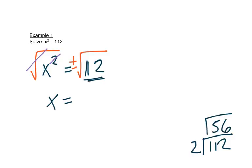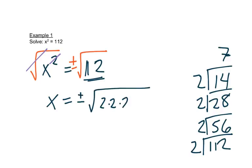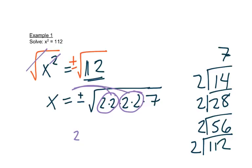We divide 28 by 2 to get 14, and 14 by 2 to get 7. Seven is prime, so we're finished. So we have 2 × 2 × 2 × 2 × 7. Looking for pairs of numbers, we find two pairs of twos, each pair comes out as a 2, giving us positive and negative 4√7.